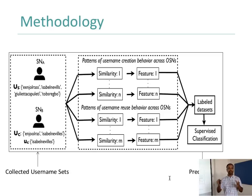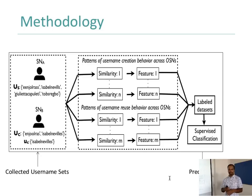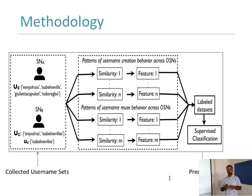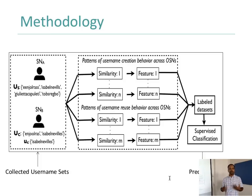Let us go back to the problem statement: given two user profiles and the respective username sets, SNA (Twitter) and SNB (Facebook), we look at handles in these two networks and find out whether the handles are the same. We look at features — for example, profile picture and location of the account — and use these details as features to find out whether they are actually the same user.